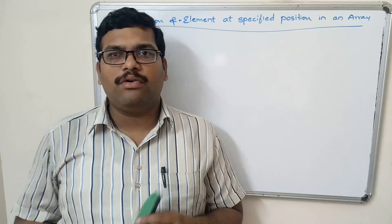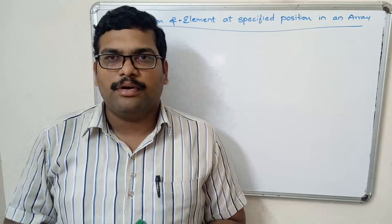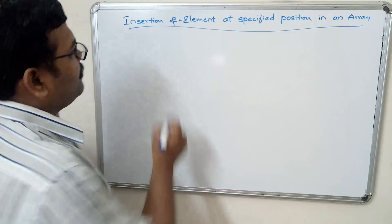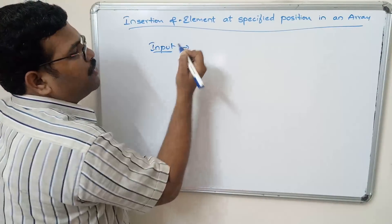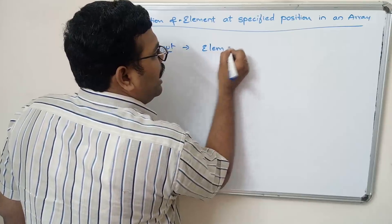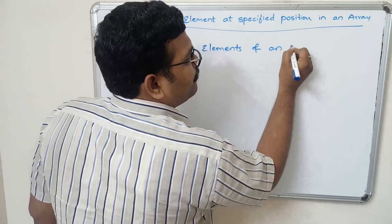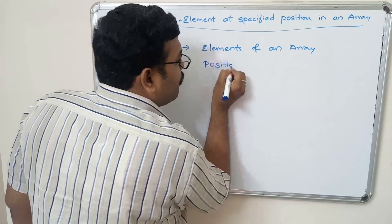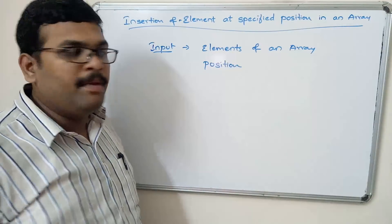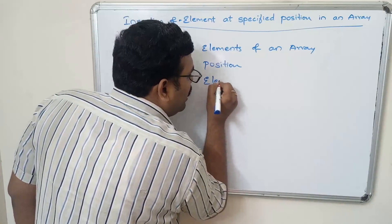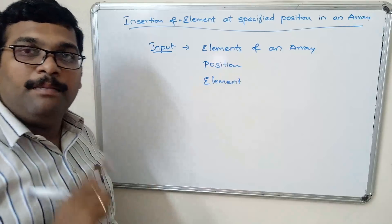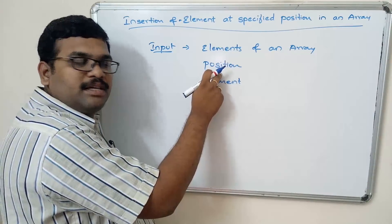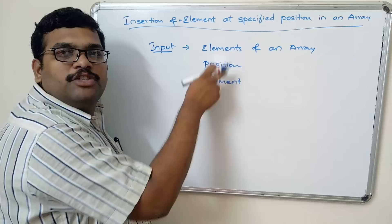Let us look at an example so we can write the code. First, what inputs must the user provide? The user must give: first, the elements of the array; second, the position where the new element is to be inserted; and third, the element which is to be inserted.